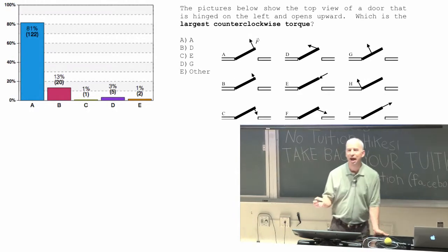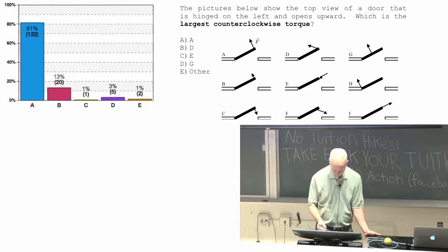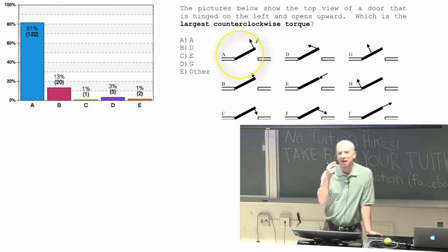All right, so your practical experience opening doors suggests that the lowest one was E, other suggests that A is the best way to do it.